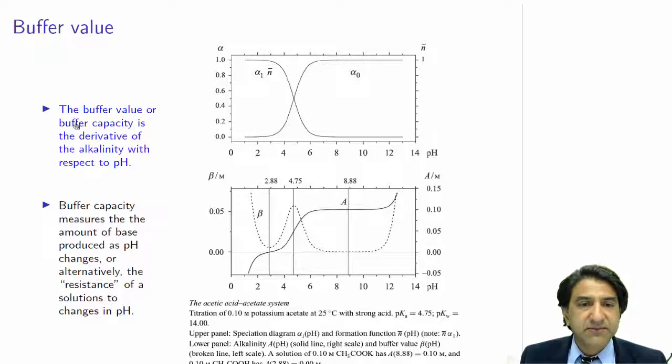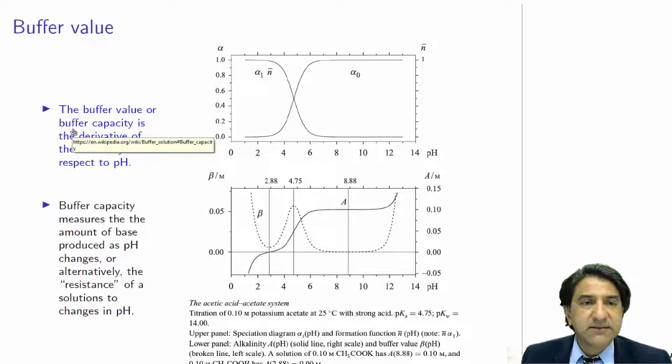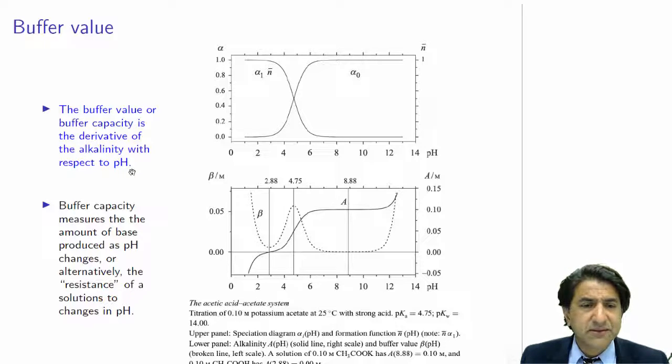What is the buffer value? The buffer value is a measure of how resistant the liquid is to pH change. The buffer value or buffer capacity is the derivative of the alkalinity with respect to pH. What does that mean? It means that if the pH changes by adding acid or base, then if the alkalinity doesn't change, the net amount of acid or base doesn't change, it's a good buffer. If adding acid or base doesn't change the net amount of base in the solution, that's a good buffer. The derivative is the change in alkalinity with respect to pH. If it doesn't change, the derivative is zero and that means it's a good buffer.